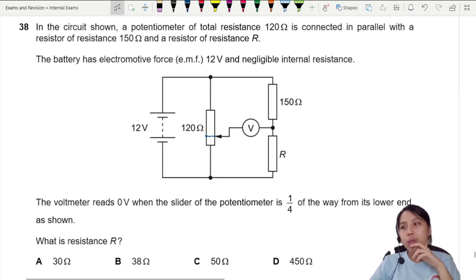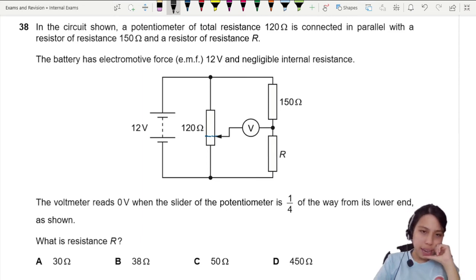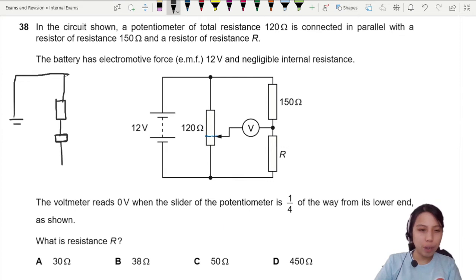I would recommend when you have a potentiometer and you're not sure how to think of this thing moving around, try and redraw. So let's say I simplify this a bit. I'm going to have 12 volts and split up this 120Ω into two resistors, two parts, to make it easier on our brain.